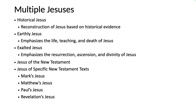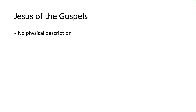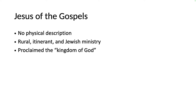Each book of the New Testament has its own artistic and theological presentation of who Jesus is and how his life, death, ministry, resurrection, ascension, and divinity are significant. When it comes to the Jesus of the Gospels, there are some things all of them seem to indicate. First, none of the Gospels is concerned with what Jesus looked like — in no Gospel do we have a physical description of Jesus. Second, in all of the Gospels, Jesus has a rural, itinerant, and Jewish ministry: he is traveling around, largely in villages and not urban centers, proclaiming a message to his kinfolk. While Jesus does interact with non-Jews or Gentiles in the Gospels, the focus of his ministry appears to be to other Jews, unlike Paul, the so-called apostle to the Gentiles.